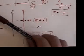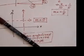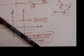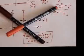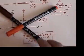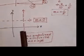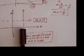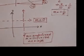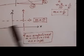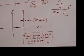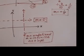So slopes are either negative, slopes are positive, or slopes are vertical — in which case they're undefined — or horizontal, in which case the slope is zero.